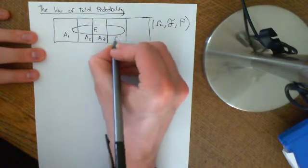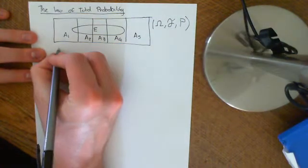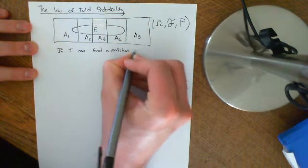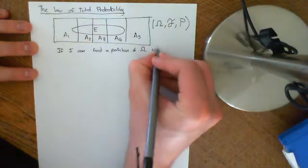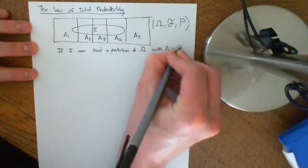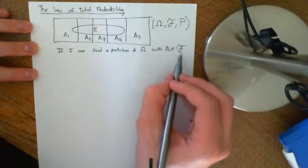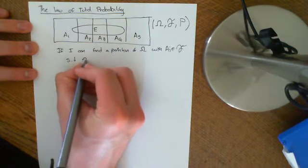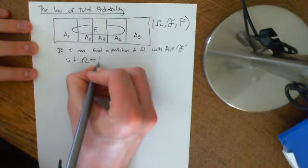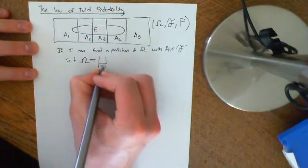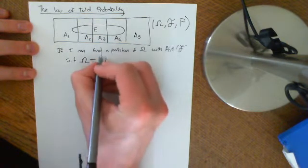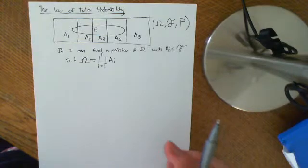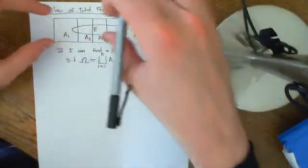Basically, if you can form a partition of your entire sample space with events: if I can find a partition of my sample space Ω with Ai, which are elements of the event set F — and it's very important that they need to be events, because we need to be able to ascribe a probability to each of them — such that Ω is equal to the disjoint union, for i = 1, 2, ..., N (a finite number of pieces initially), of Ai. So you're splitting the sample space up into a finite number of disjoint sets.